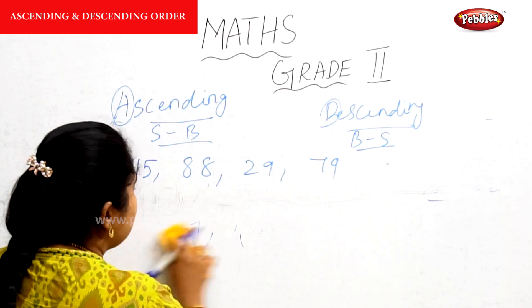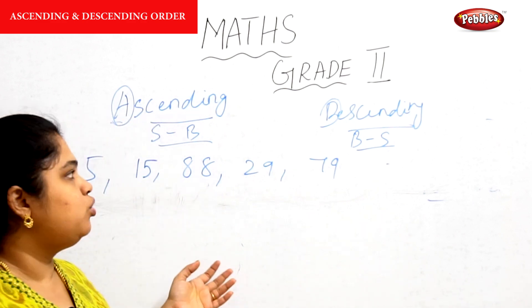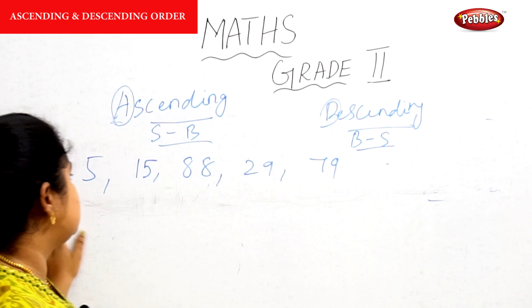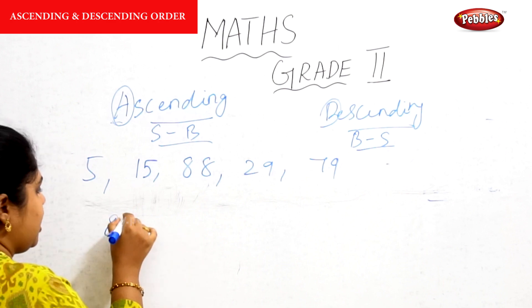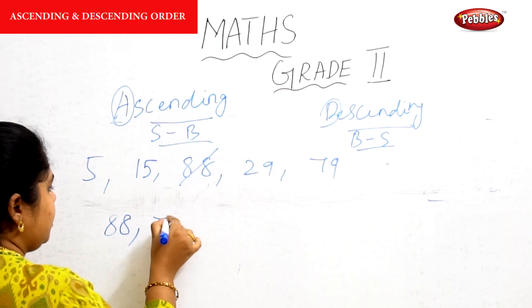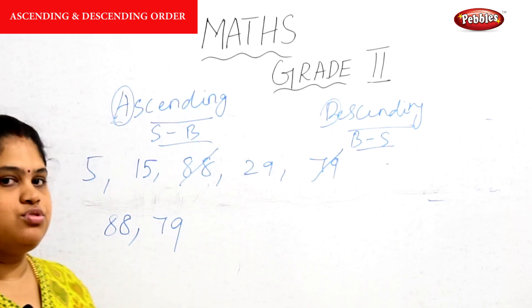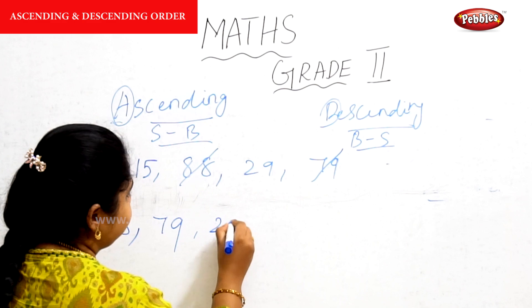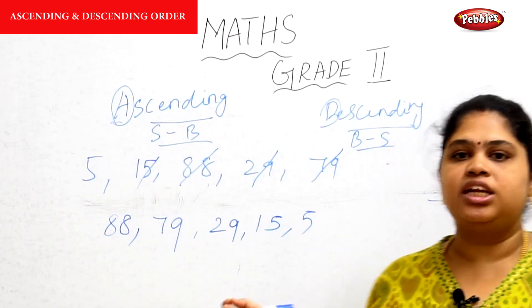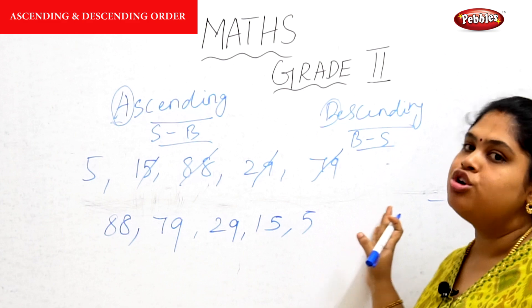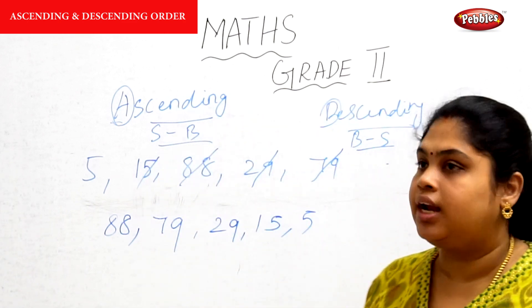For descending order, we rearrange from big to small. Which number comes very last, meaning largest? 88. Next is 79, then 29. If you get confused, just strike out the numbers so you don't get confused. Next is 15, then 5. This is rearranging in descending order — big to small. So the two headings we have seen are: rearrange in ascending order and rearrange in descending order.